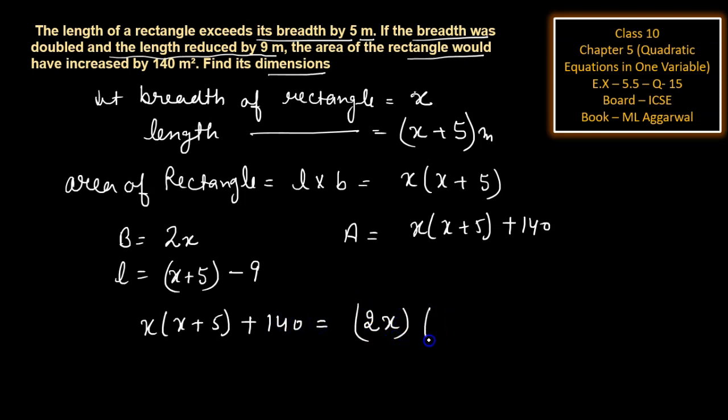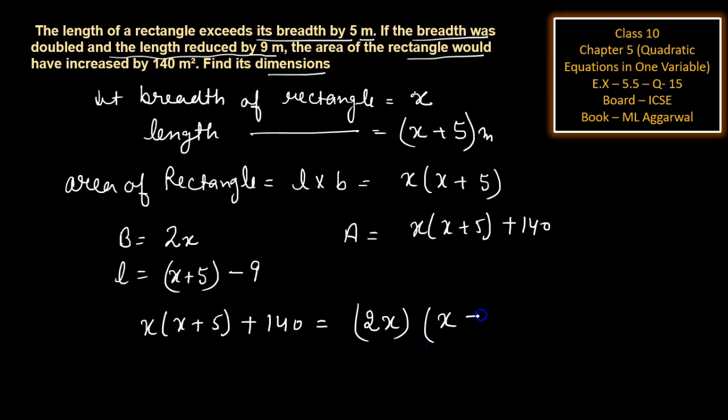So we write: x(x+5) + 140 equals length into breadth, which is 2x into (x+5−9), giving 2x into (x−4). Now simplifying.